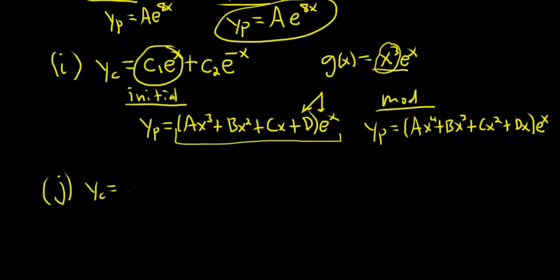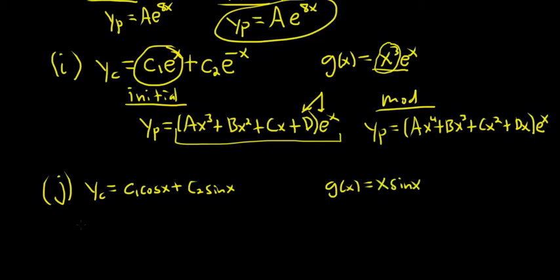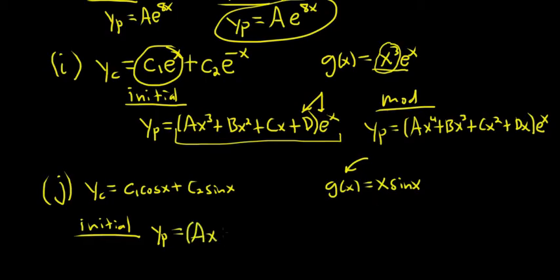Example J. Yc equals C1 cosine x plus C2 sine x. And let's say g of x is x sine x — this one's pretty tricky. Our initial is based solely on the right-hand side. It's got a sine, so we need sine and cosine. It's got an x, so we need a full linear in front of each: ax plus b, times sine x, plus cx plus d, times cosine x. That's the initial guess.